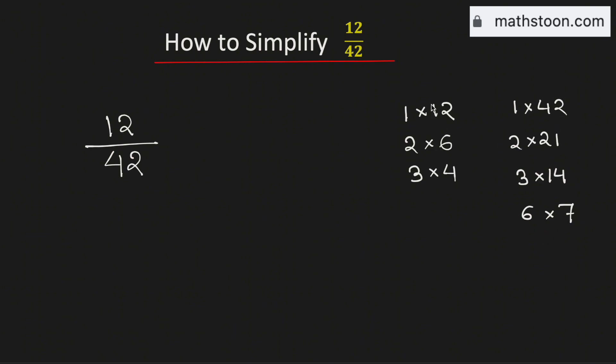So among these numbers, see that 6 is the greatest one which is common in these two lists. Therefore, 6 is the greatest common factor of 12 and 42.